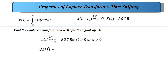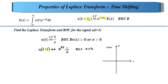For u(t + 3), the shift is +3, meaning t0 = -3. Applying the property, the Laplace transform becomes e^(3s) times 1/s, giving e^(3s)/s. The ROC remains σ > 0. Plotting the ROC: if σ = 0 is the center axis, then σ > 0 corresponds to the right half of the s-plane.